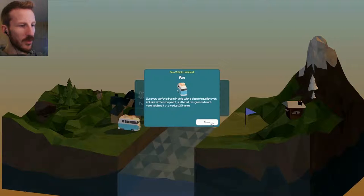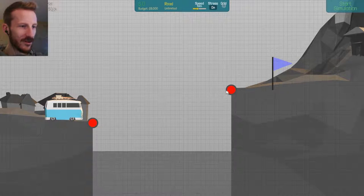Might as well use our budgets. That's the goal. Oh yes, this is in the game icon. I like it. Live every surfer's dream in style with a classic traveler's van. Includes kitchen equipment, surfboard, bro gear, and much more. Weighing in at a modest 2.5 tons.